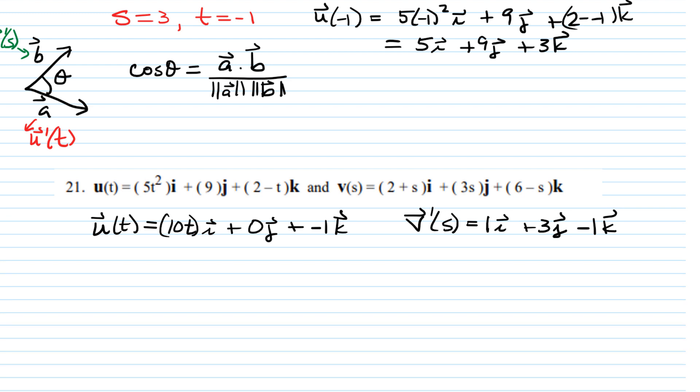All right, but we want these values to be evaluated at the point where they intersect. So that means that we're going to plug in negative 1 for t. We're going to get negative 10i plus 0j plus negative 1k. And we're going to plug in 3 for s. And we're going to still get 1i plus 3j minus 1k. So those are our two vectors.